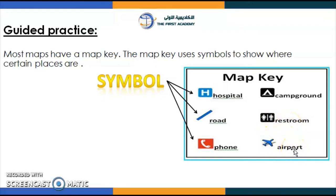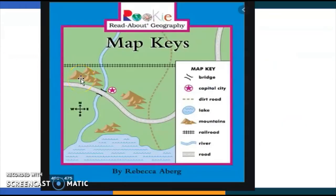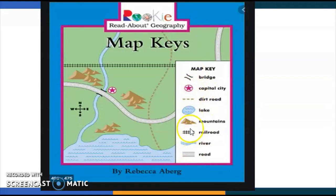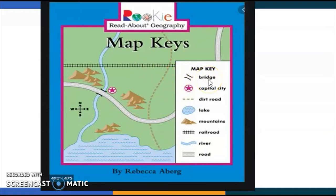Now I'm going to show you something clearer. Everyone, look at this map — and here is the map key. Let's read each word, see its symbol, and find it on the map. Let's start with the first one: bridge. Let's look for the bridge on the map. It's over here — see? It's the same symbol as this one.